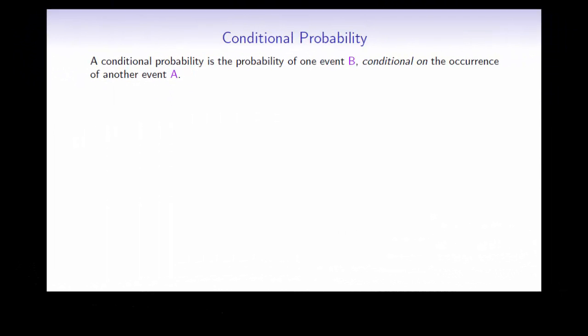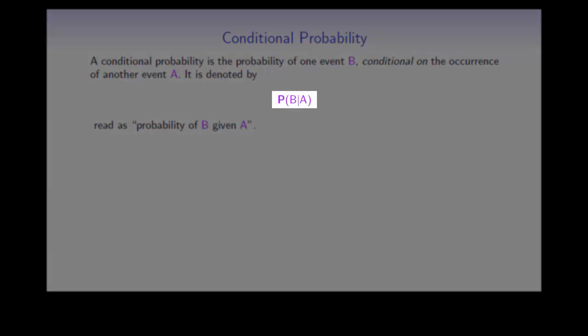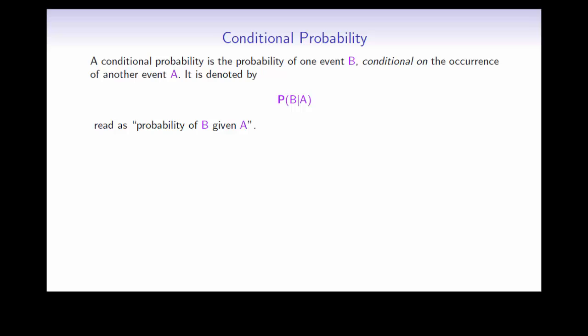Conditional probability is the probability of one event conditional on that some other event definitely occurs. This is denoted by P(B|A), which is written as the probability of B given A.